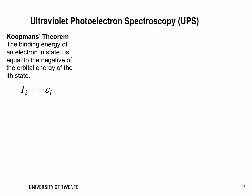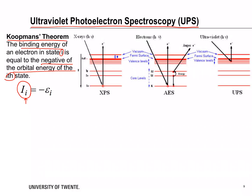In order to determine this experimentally, we use a technique called ultraviolet photoelectron spectroscopy, which is based on Koopmans' theorem, in which the binding energy of an electron in state i is equal to the negative of the orbital energy of that state. Basically, this means we can infer from the kinetic energy of detected electrons what their binding energy is.